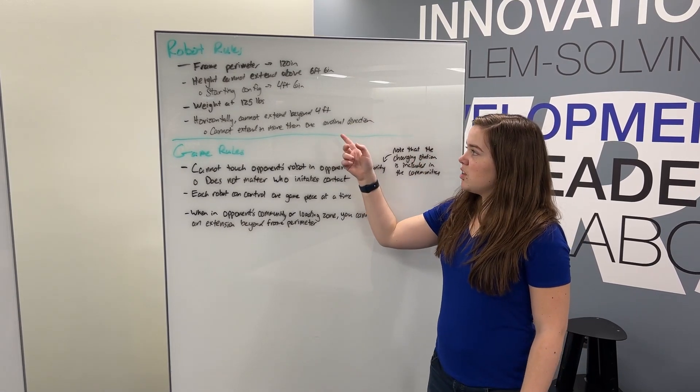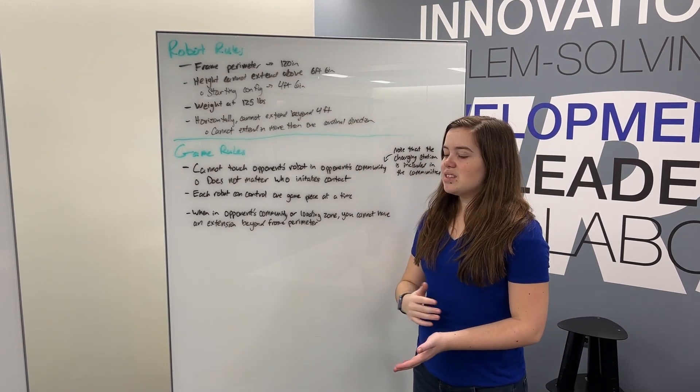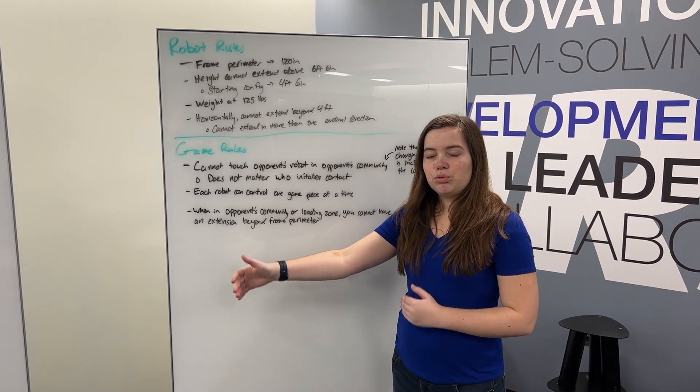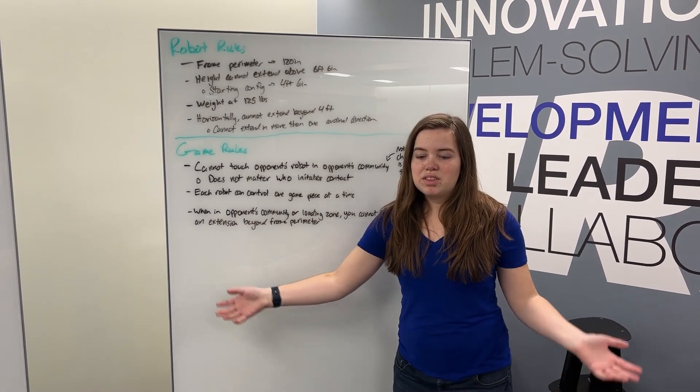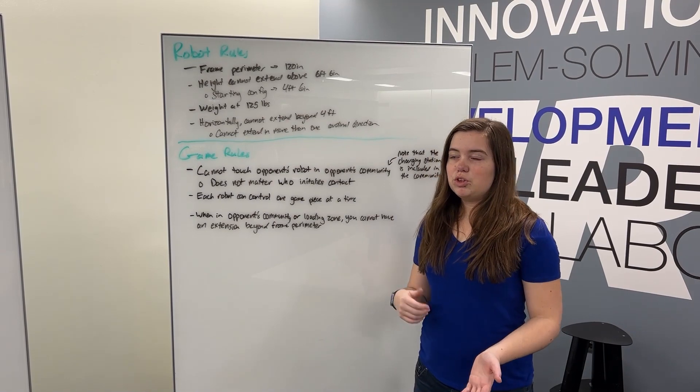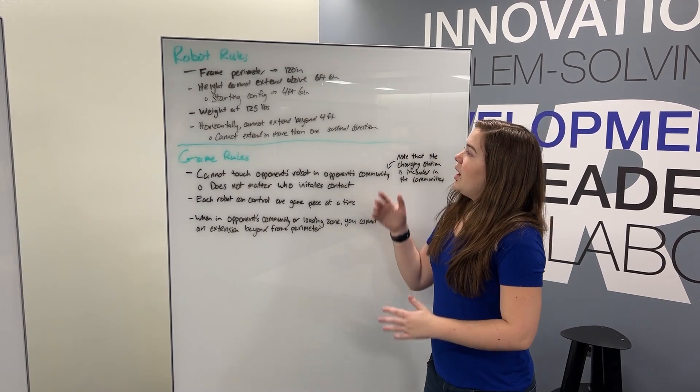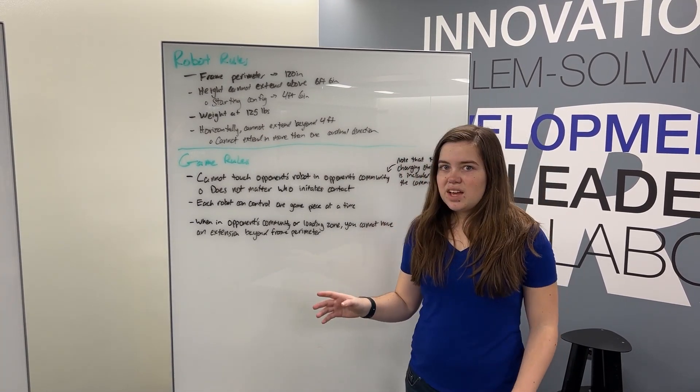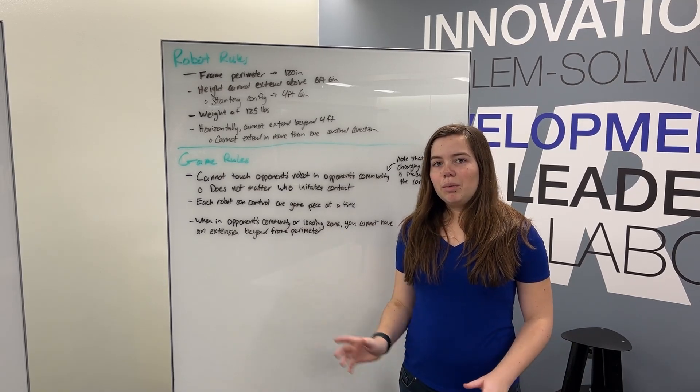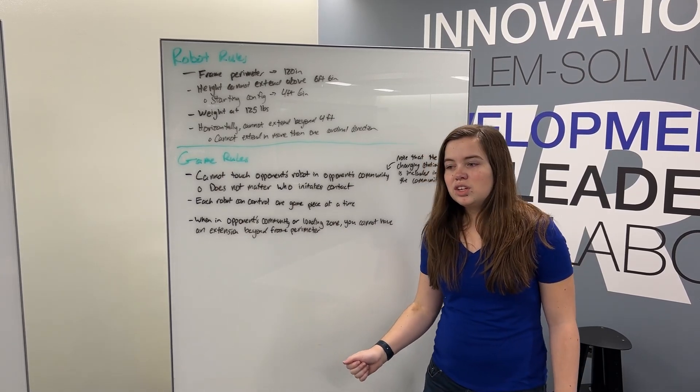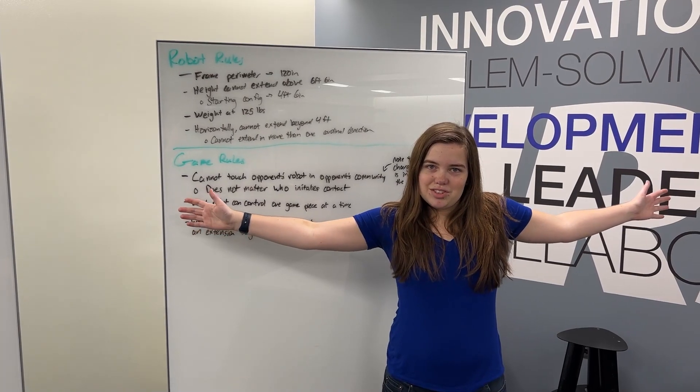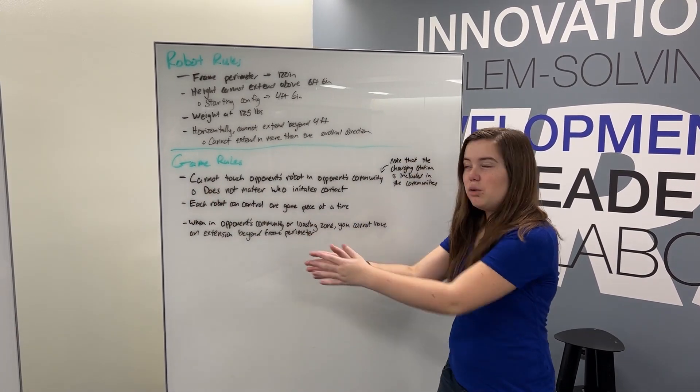As well as horizontal extensions, it cannot extend beyond 4 feet of your frame perimeter and obviously everything must be inside your frame perimeter before you start a match. And it's also worthy to note that you cannot extend items of your robot in more than one cardinal direction. So you cannot have two separate flanges on either side of your robot. It has to be going in one direction.